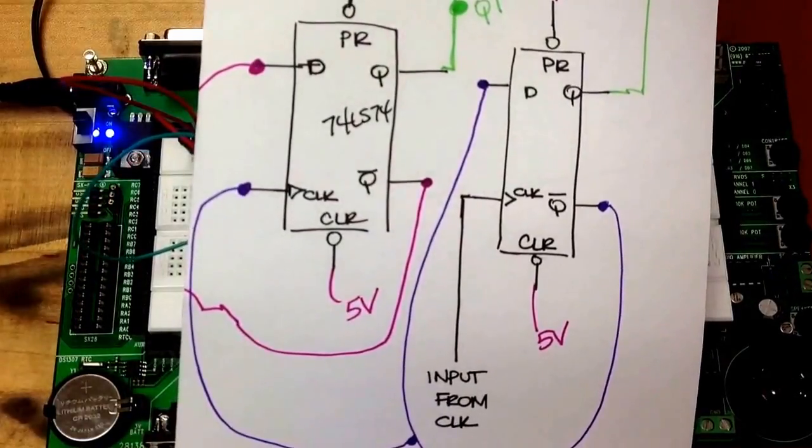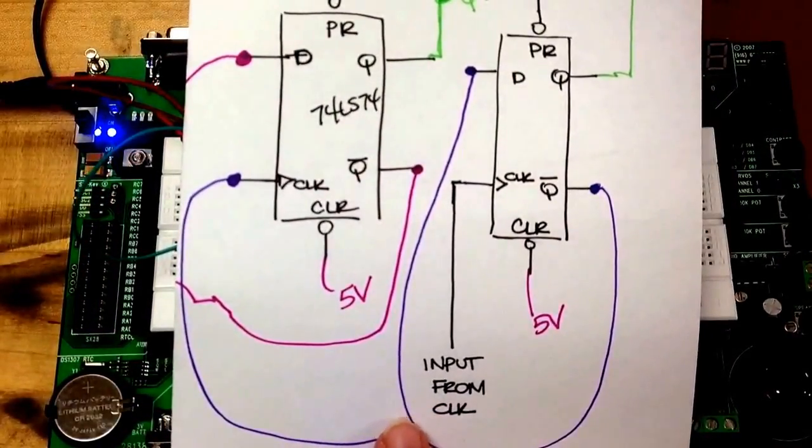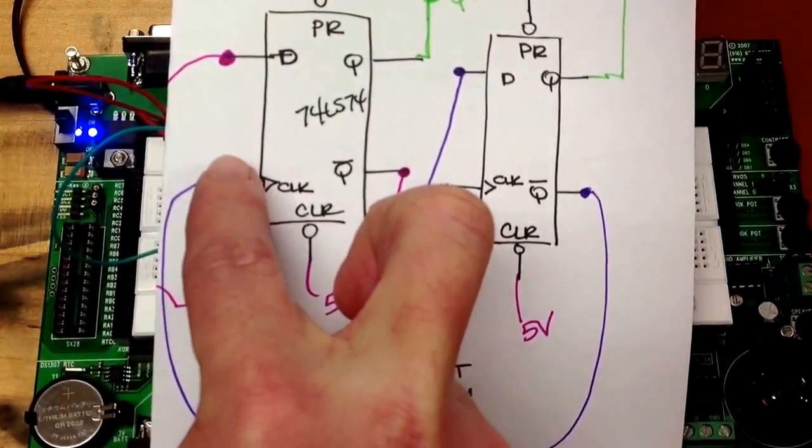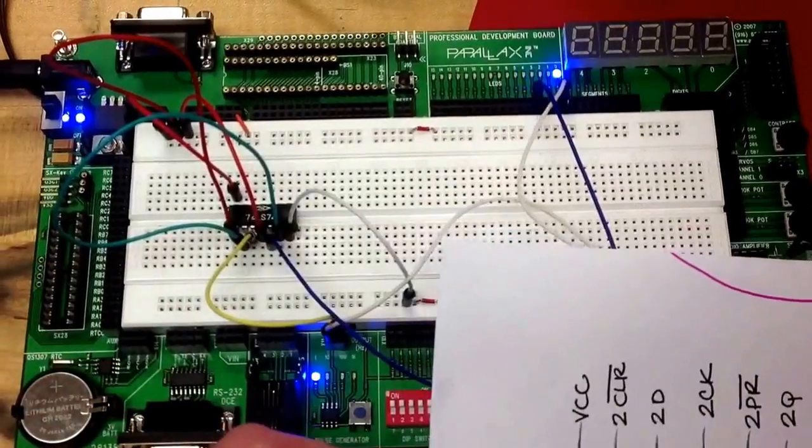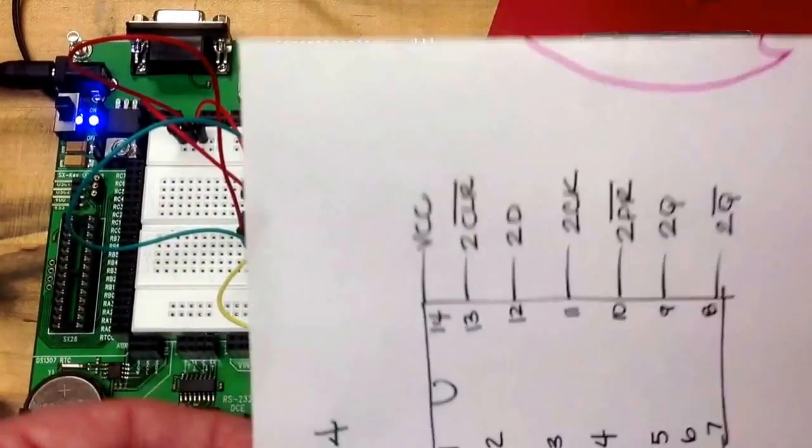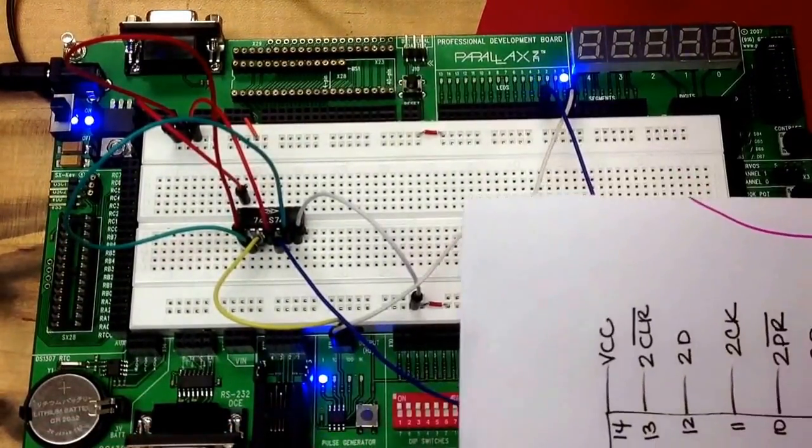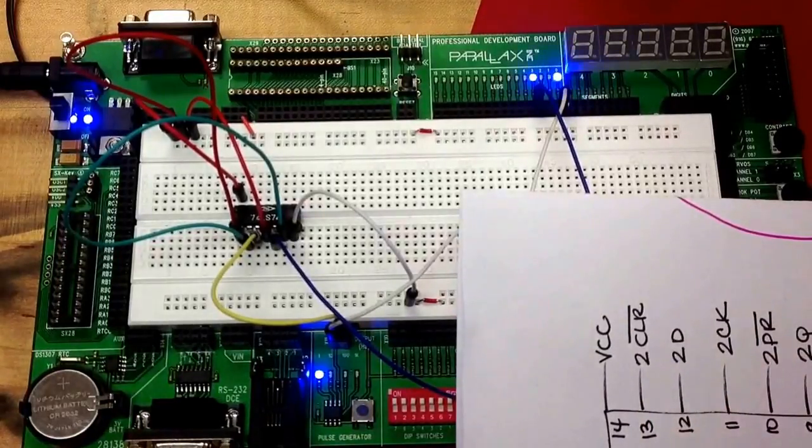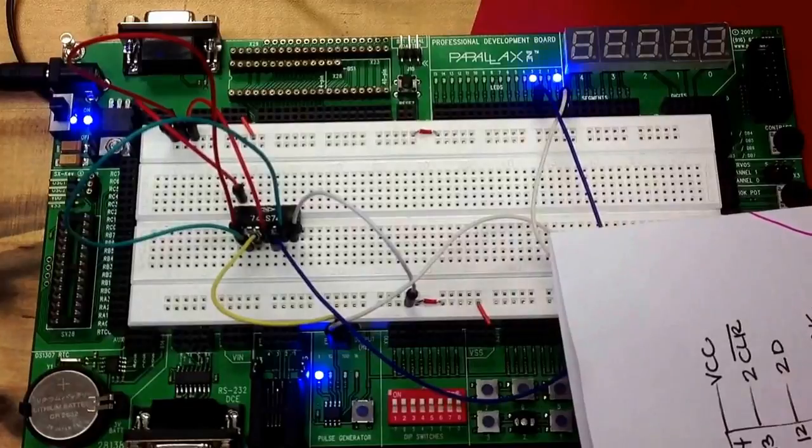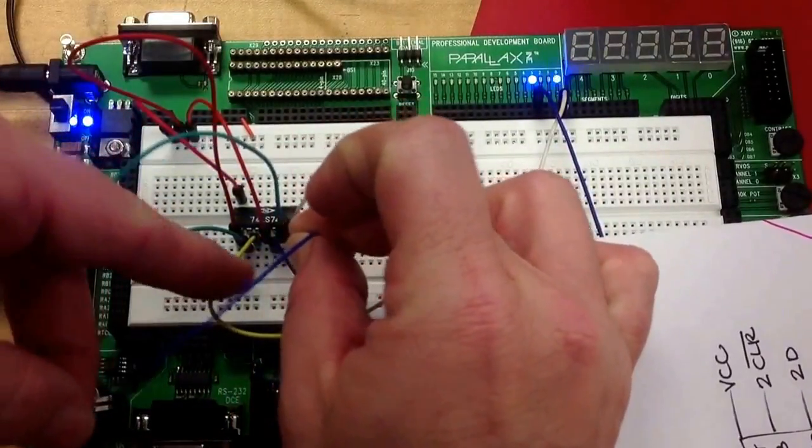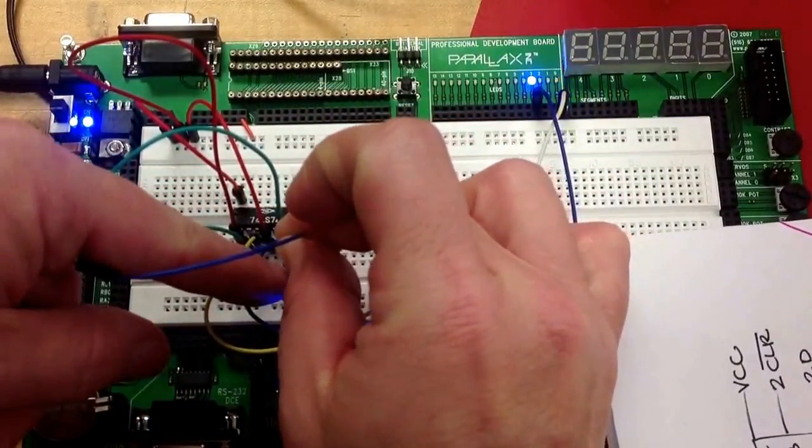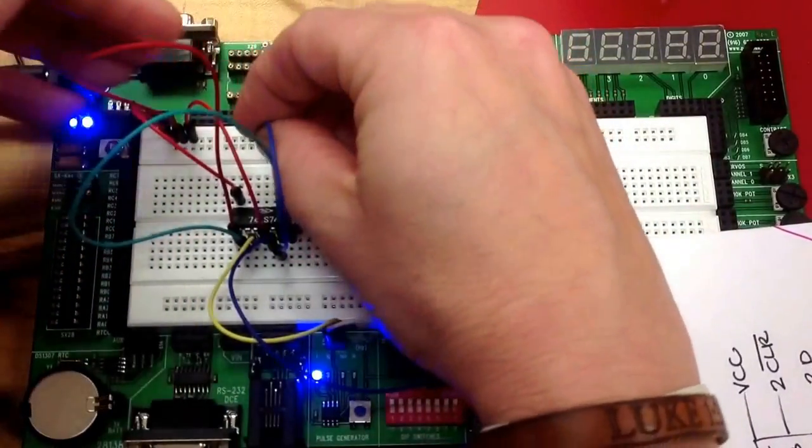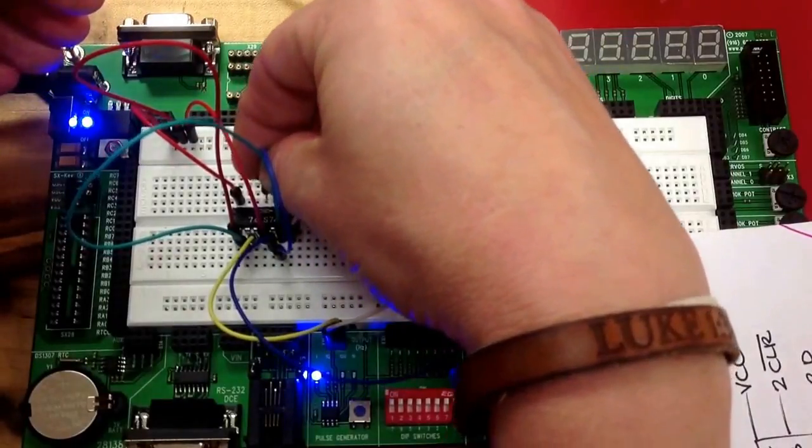So to make the next one, I needed to also take not Q and feed it into the clock of the other flip-flop. So when I look at my pin diagram, that's on pin 11. So I have to go from 6 to 11, and I'll find a wire to do that. There's pin 6 again, and here is pin 11.